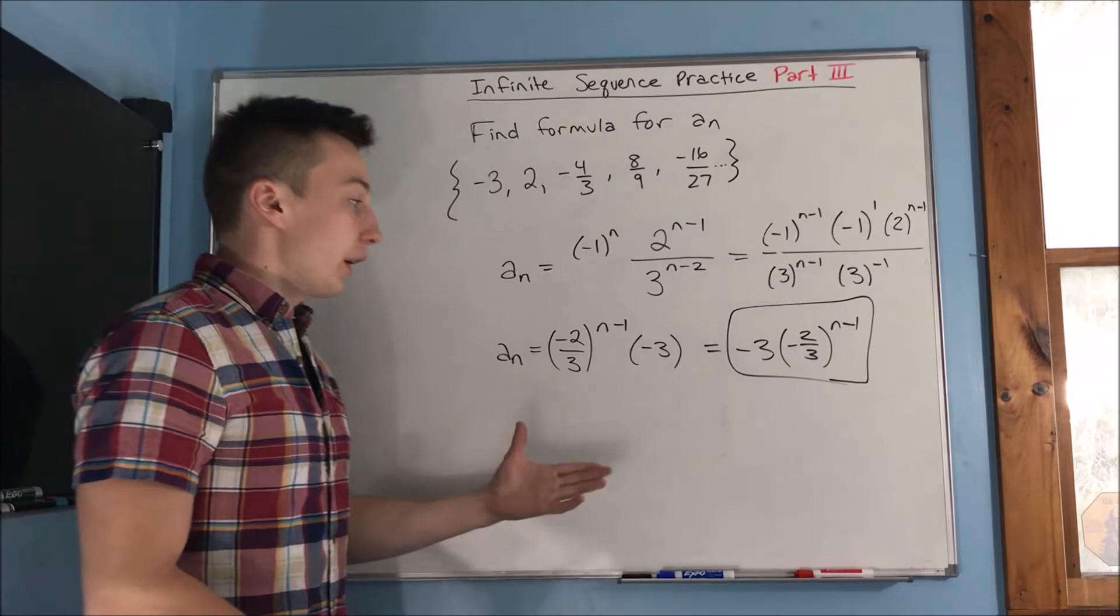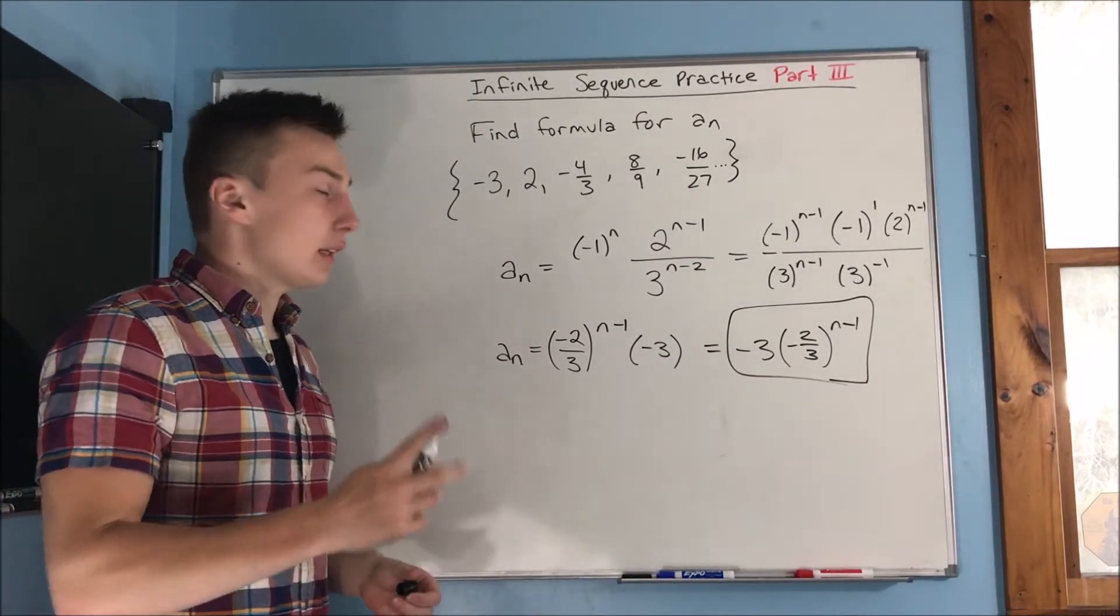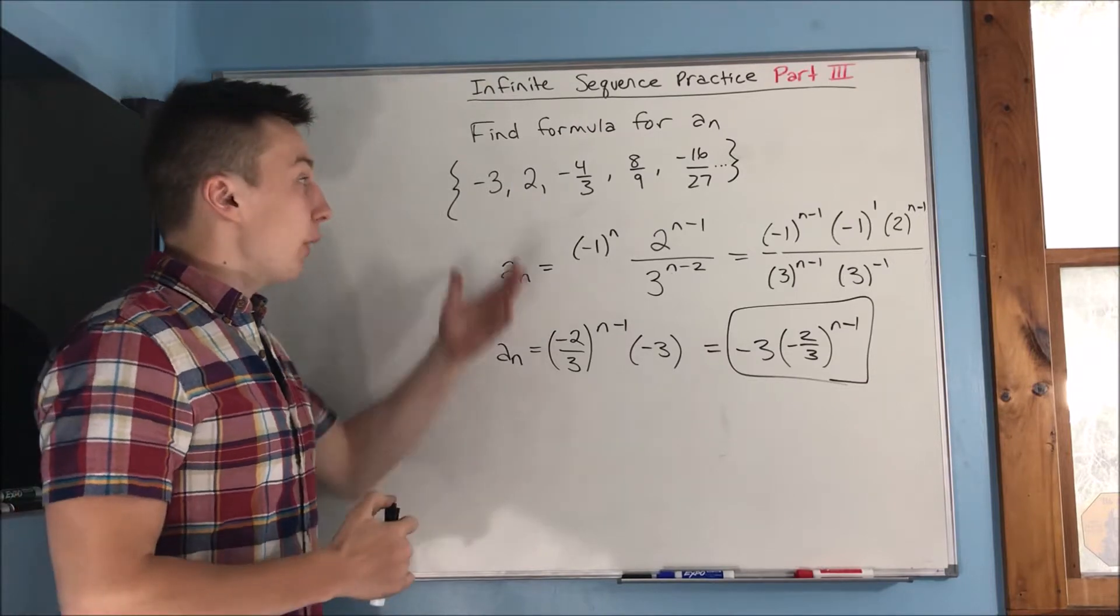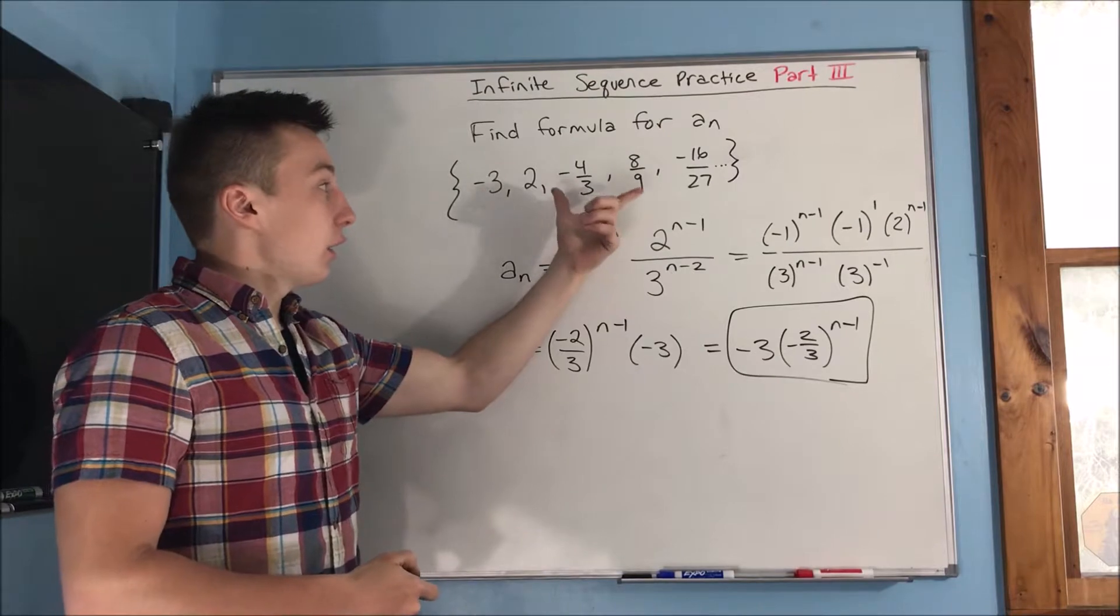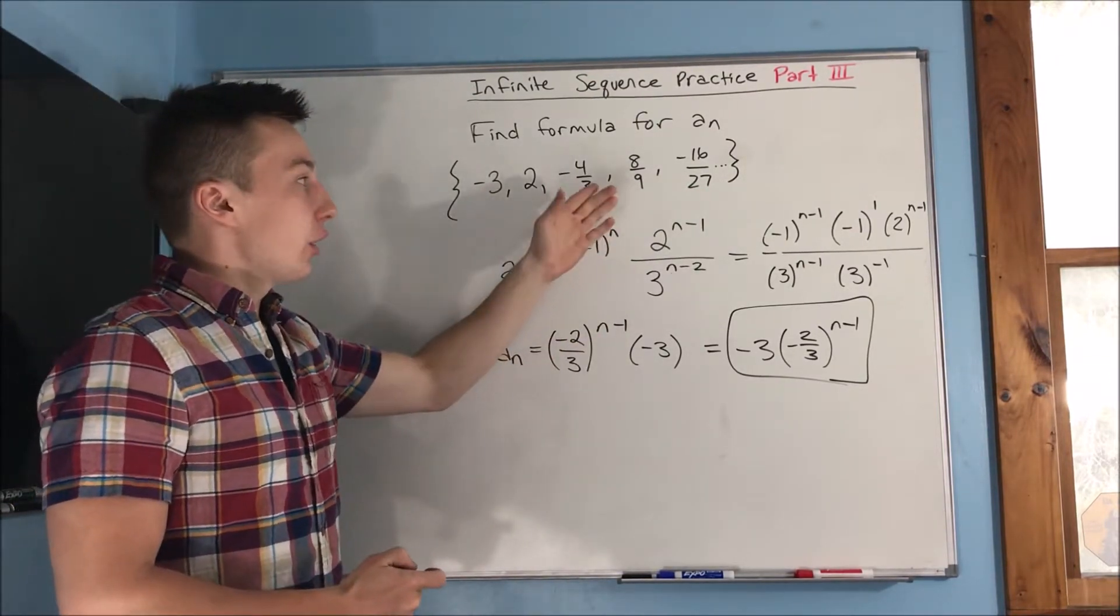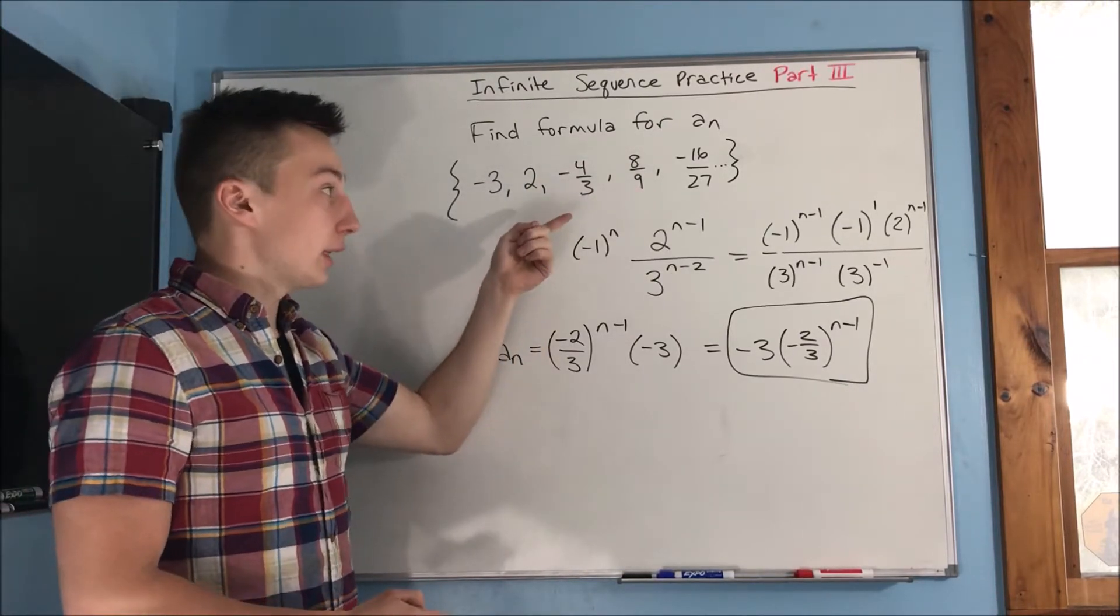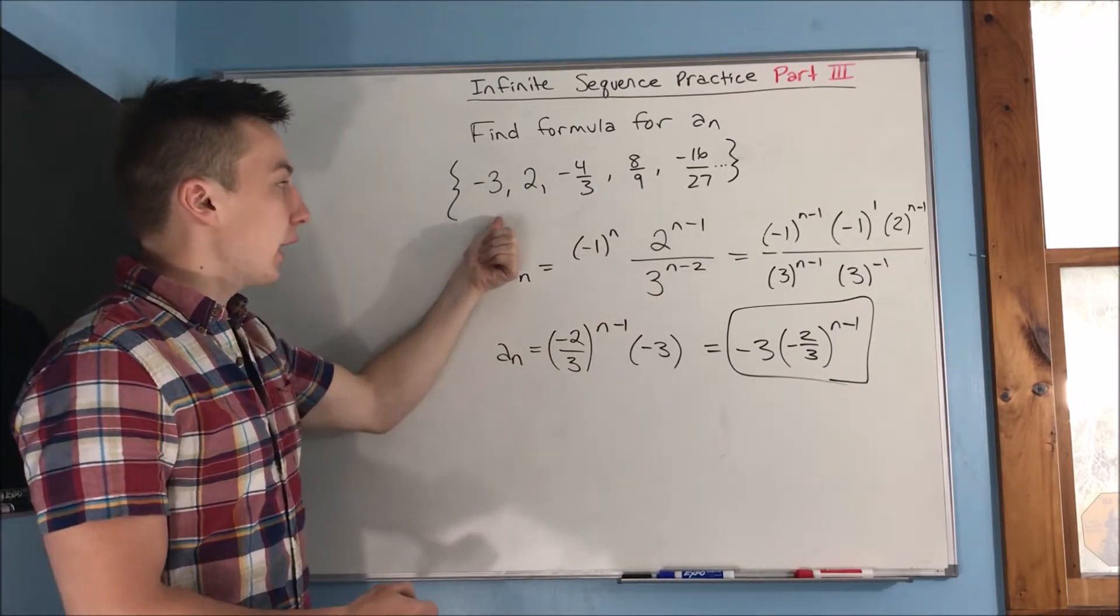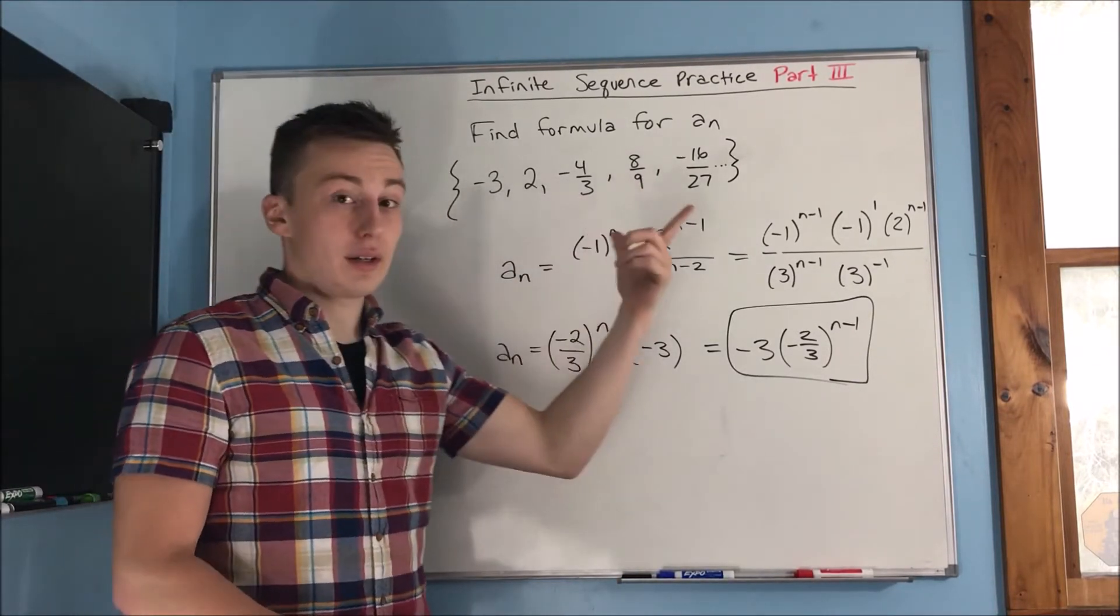So there you go. That's your formula. So just try to take care of one thing at a time. If you do end up with an infinite sequence like this, I would just try to look at the fractional part. When it gets broken up into fractions, you can more easily see what's happening to the numerator and what's happening to the denominator. Here, from negative three to two, we don't really know exactly what's happening. But here, it's a lot more clear.